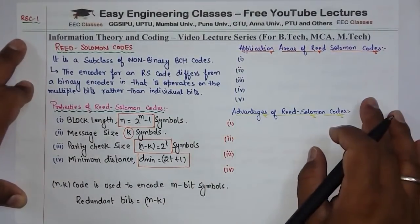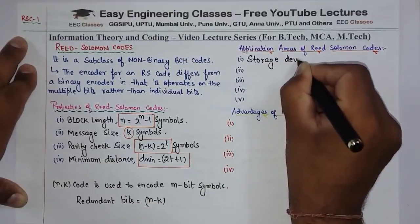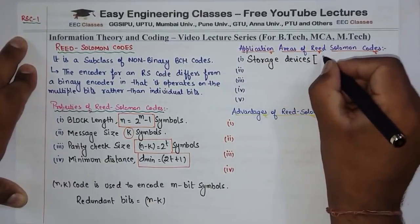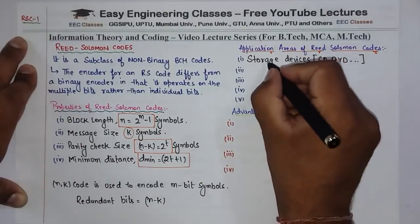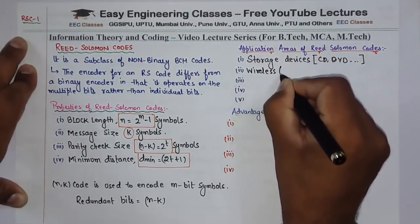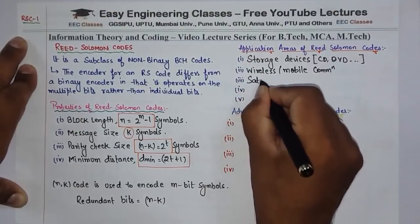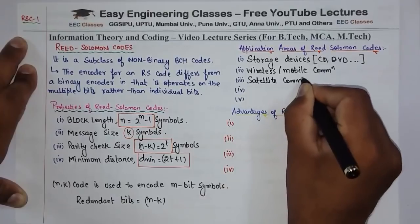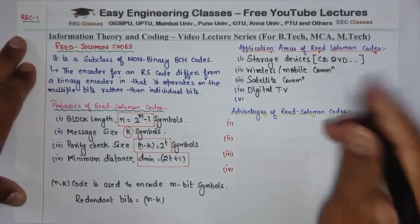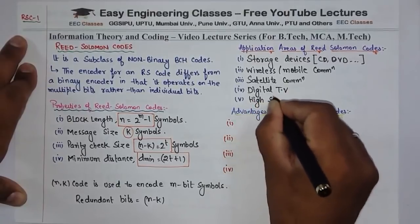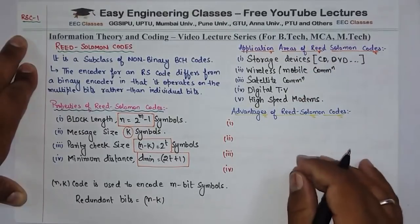Now we will see the application areas of Reed Solomon Codes. Reed Solomon Codes का use storage devices जैसे CD, DVD में होता है। Then we also use it in wireless or mobile communication for data transfer। Satellite communication में भी use होता है। जितने भी digital TVs और DTH boxes हैं उनमें भी Reed Solomon Codes का use है, and also in high speed modems. जहाँ भी high speed data transfer की जरूरत है, वहाँ Reed Solomon Codes का use होता है।